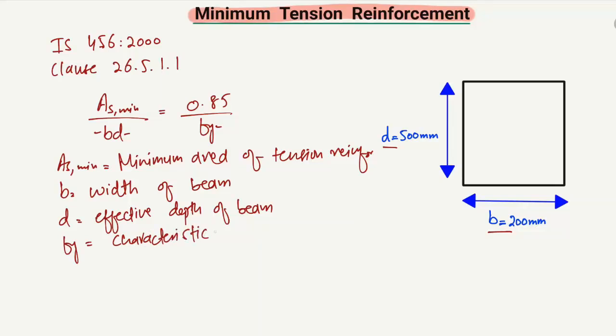fy is the characteristic strength of the steel reinforcement bar, expressed in Newton per millimeter square, or equivalently in megapascals. These are the different parameters in this equation.